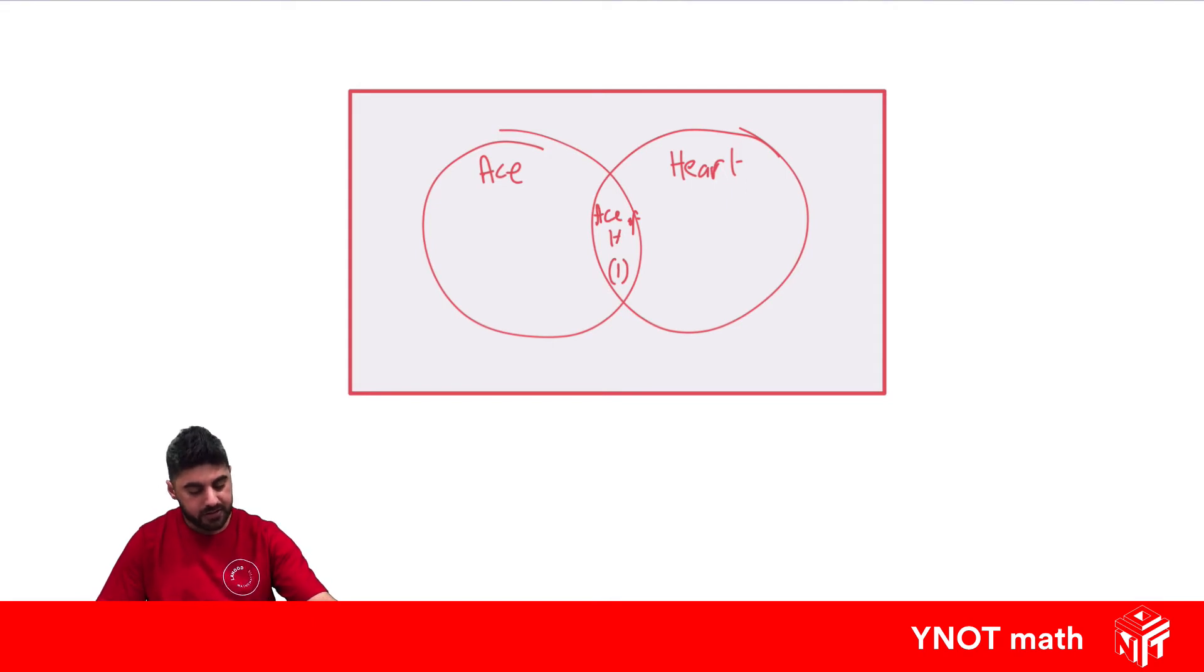There are three other hearts. We've got the ace of diamonds, the ace of clubs, and the ace of spades. So there's three aces that are just aces but not a heart. So here is aces that aren't hearts.